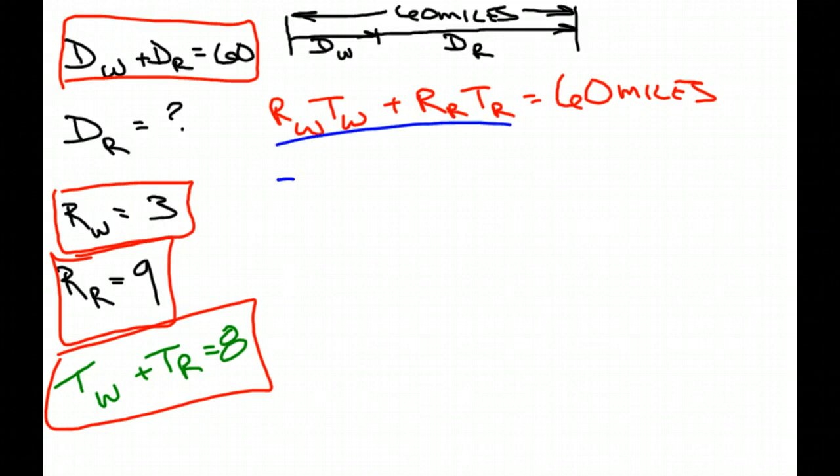So let's start filling in some of the blanks here. RW is three. What about my TW? Eight minus TR. Or negative TR plus eight. What is my RR and my TR? RR is nine, TR we'll just leave it TR. Equals 60. Solve for TR, please.